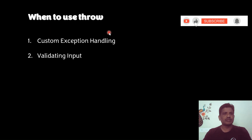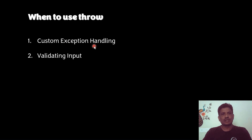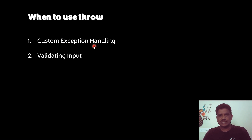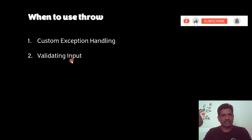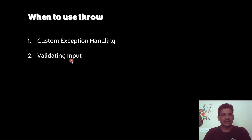When to use the throw keyword? The throw keyword is used to handle custom exceptions. What are custom exceptions? You can create your own exception — that is called a custom exception. The second use is for validating input. Based on the input, we can throw an exception. For example, if a person's age is 18 or above, then that person is eligible to cast a vote. In such cases, based on the condition we throw an exception explicitly using the throw keyword.